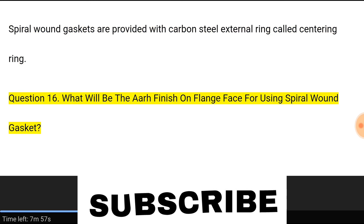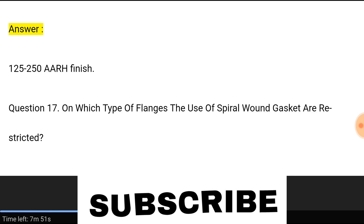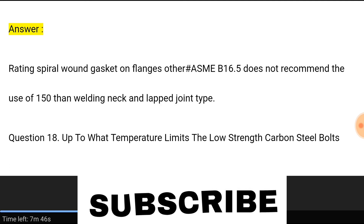Question 16: What will be the AARH finish on flange face for using spiral wound gasket? Answer: 125 to 250 AARH finish. Question 17: On which type of flanges is the use of spiral wound gasket restricted? Answer: ASME B16.5 does not recommend the use of spiral wound gasket on flanges of rating 150 other than welding neck and lap joint type.